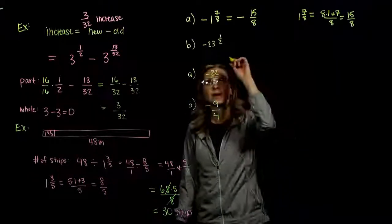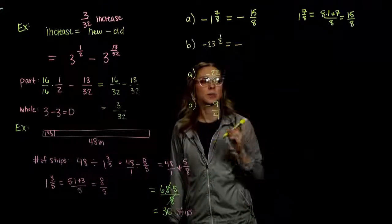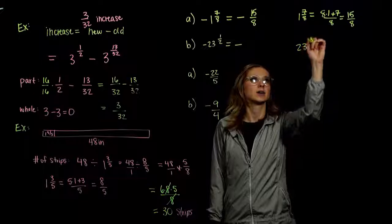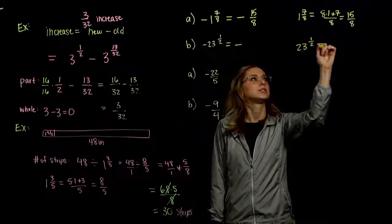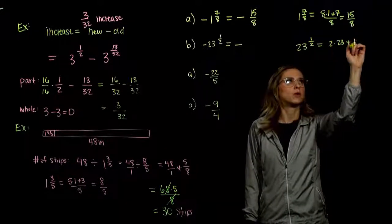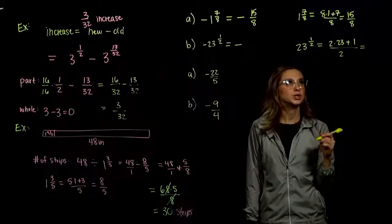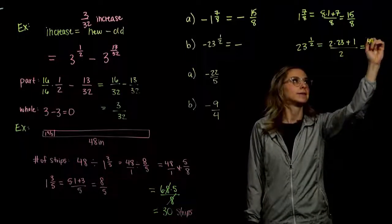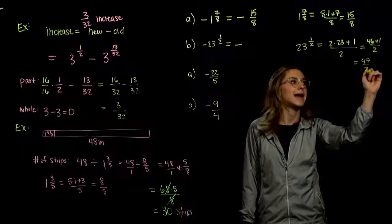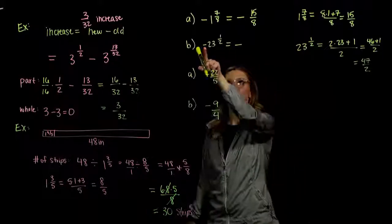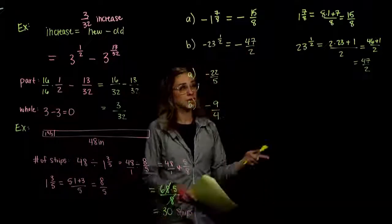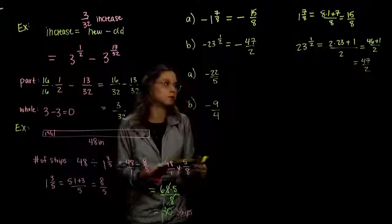Same story for part B. We start with a negative number, so the improper form should still be negative. Converting twenty-three and a half: two times twenty-three plus one all over two — forty-six plus one gives us forty-seven halves. Since the original was negative, our answer is negative forty-seven halves. We could always convert back to double-check.